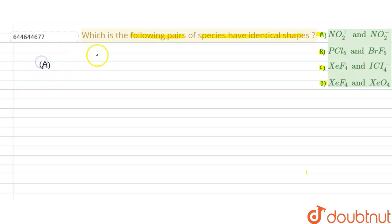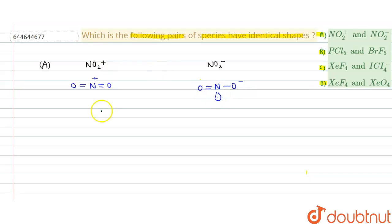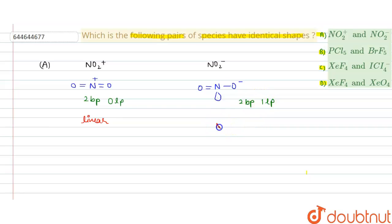First we check option A. In option A the species are NO2+ and NO2-. For NO2+, the structure is N with two double bonds to O, a positive charge, zero lone pairs and two bond pairs — so the shape is linear. For NO2-, there is one lone pair, two bond pairs, and one lone pair on nitrogen, so the shape is angular. Since they are not identical, option A is not our answer.